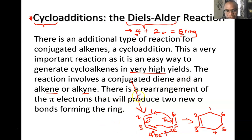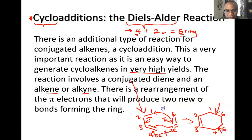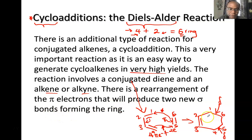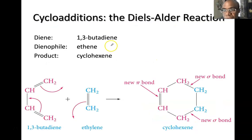In this rearrangement of pi bonds, as I push arrows, you will produce two new sigma bonds. Those two arrows form the two new sigma bonds that are used to close the ring, and you're forming a six-membered ring.